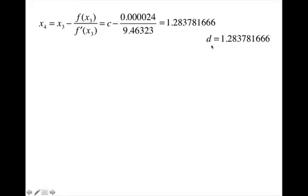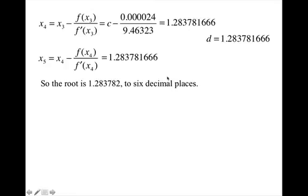And now I'm going to do x₄. Plug it in. And I get the following for d in my calculator. I'm going to do it again. And notice this time I have six decimals that are the same. So that means I can go ahead and stop. And I can say that the root is 1.283782 to six decimal places.